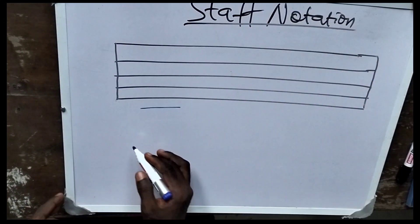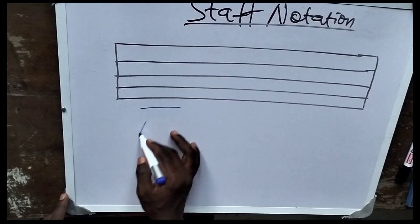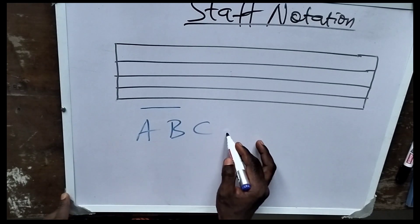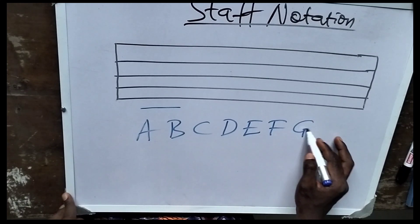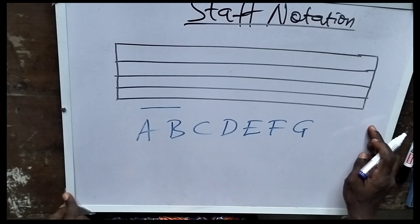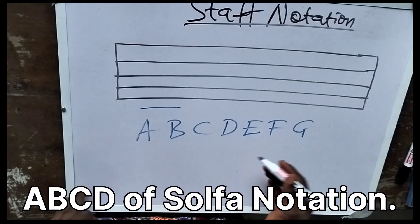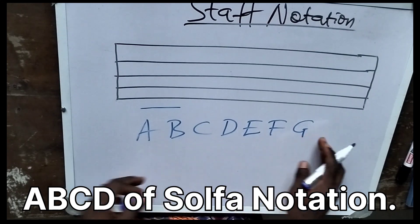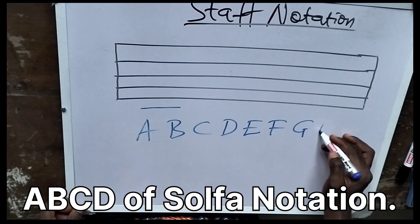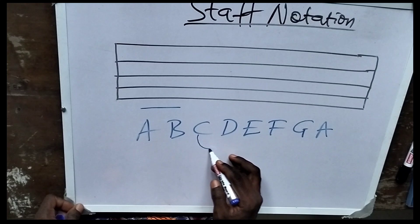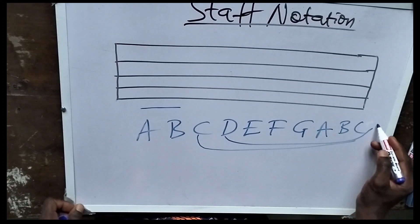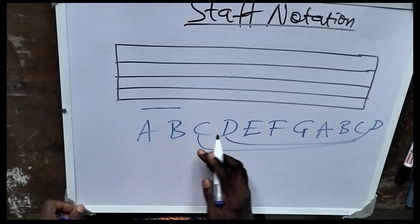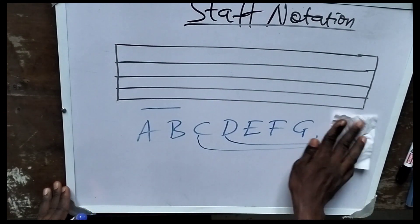Remember we have the letters in music: A, B, C, D, E, F, and G. When we stop at G, we start another A, B, C, D. You can watch my previous videos on solfa notation. So we start another A. But if we start from C, we are going to end at C, making it one octave. If we start at D, we stop at D again, making another octave. But we are stopping at G for now.